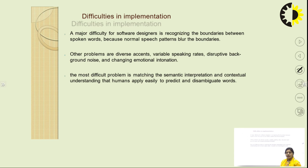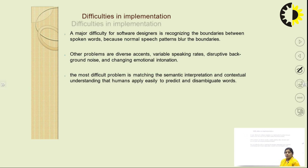The most difficult problem is matching the semantic interpretation and contextual understanding that humans apply easily to predict and disambiguate words. Suppose two words have different meanings but the same pronunciation — recognizing the semantic interpretation and contextual understanding across all human speakers is a very difficult problem in continuous speech recognition. These problems generally occur when a person uses disambiguate words — words whose pronunciations are the same but which have different meanings.